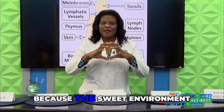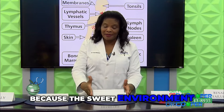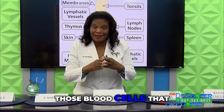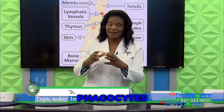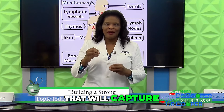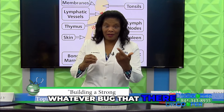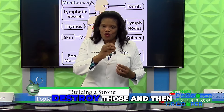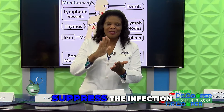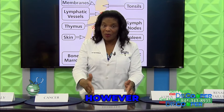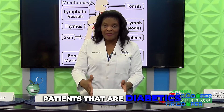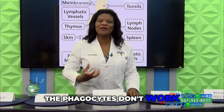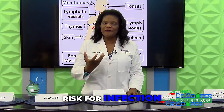Why? Because the sweet environment suppresses the function of those blood cells called white blood cells — phagocytes — that capture whatever bugs are in the blood, whether viruses or bacteria, and destroy them to suppress the infection. However, patients that are diabetics have a dysfunctional immune system. The phagocytes don't work that well, so they're at risk for infection.